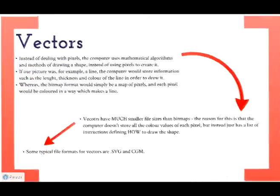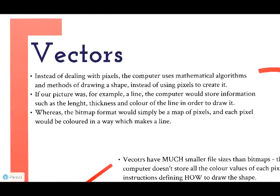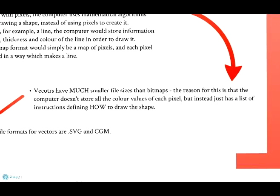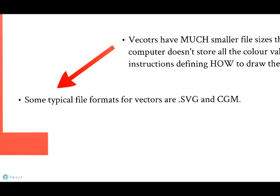The second format: Vectors. Instead of dealing with pixels, the computer uses mathematical algorithms and methods of drawing a shape instead of using pixels to create it. If our picture was, for example, a line, the computer would store information such as length, thickness and colour of the line in order to draw it. Whereas the bitmap format would simply be a map of pixels with each pixel coloured in a way which makes the line. Vectors have much smaller file sizes than bitmaps because the computer doesn't store all the colour values of each pixel, but instead just has a list of instructions defining how to draw the shape. Some typical file formats for vectors are .svg and .cgm.